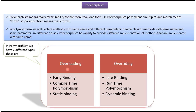There are two types of polymorphism. The first one is overloading and the second one is overriding. Overloading is also called early binding, compile time polymorphism, or static binding. Overriding is also called late binding, runtime polymorphism, or dynamic binding.